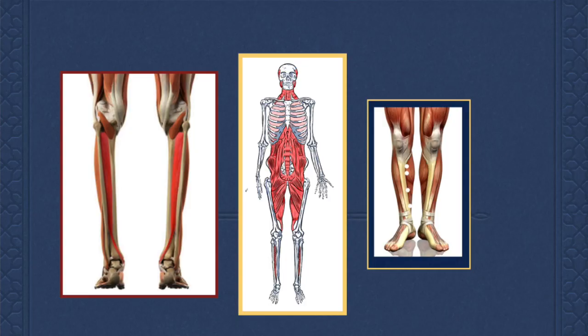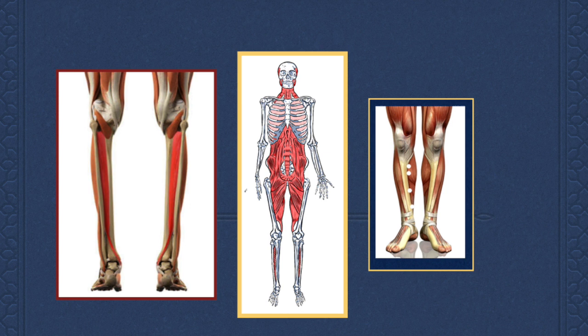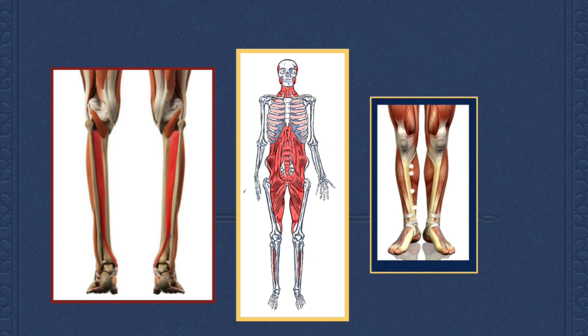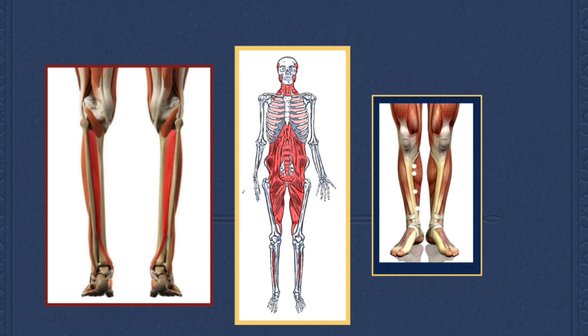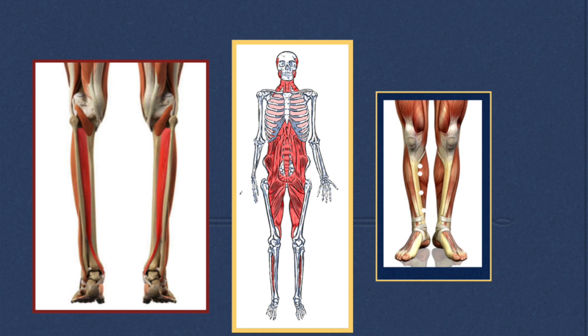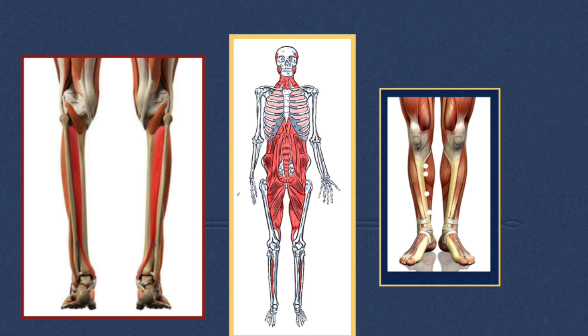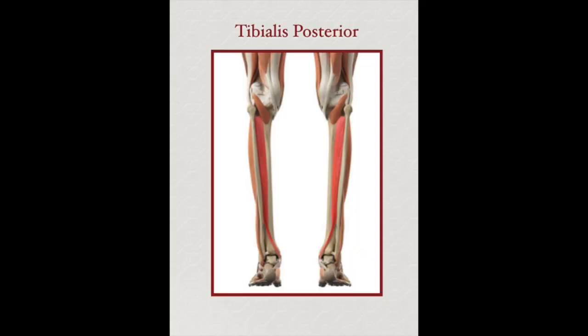One tip: start thinking of the three leg yin channels as basically being one line — the deep front line. If we look at the functions and indications of these points, even from a traditional perspective, there's a lot of overlap. For instance, Liver 3 is commonly used for gynecological conditions, as are other liver points. Liver 8 is often used for calming the mind and treating shen disturbance. The same can be said for Spleen 6. The deep front line includes the tibialis posterior muscle, and you can reach that through needling the leg yin points — but you have to make sure you get the right needle angle to reach the deep front line.